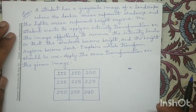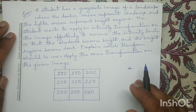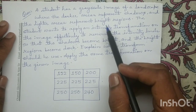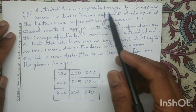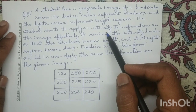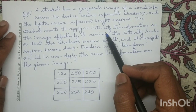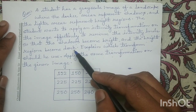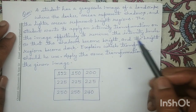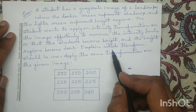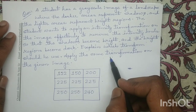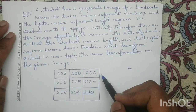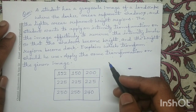Good morning all. Today we will solve a numerical question on image enhancement. In this question, a student has a grayscale image of a landscape and wants to perform an intensity transformation operation such that the shadow region becomes bright and the bright region becomes dark. In the first part we have to identify this intensity transformation operation, and in the second part we have to apply the same operation on the given input digital image.